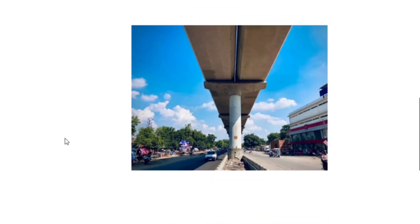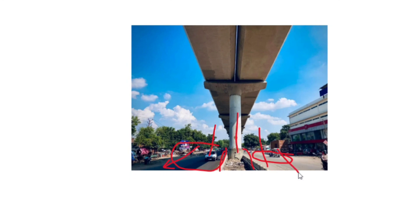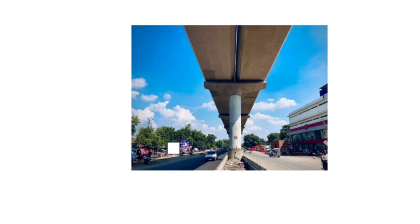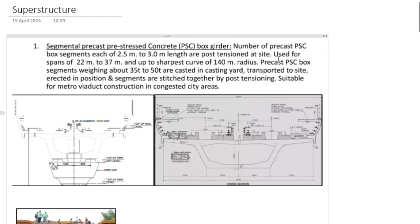Koshish yahan ki jaati hai ki kisi bhi elevated metro structure ko jitna ho sake, usse median par rakhne ki koshish karte hain, taaki jo road system hai woh proper functioning karta rahe metro banne ke baad bhi. Agar metro ka pier road mein ho to vehicle movement ko hinder kare ga. Isliye koshish ki jaati hai ki jo bhi metro ka pier aana hai woh median ke andar hi aaye aur center pe hi rahe. Superstructure mein jo normally use hote hain woh PSC type box girder hote hain aur U-girder.